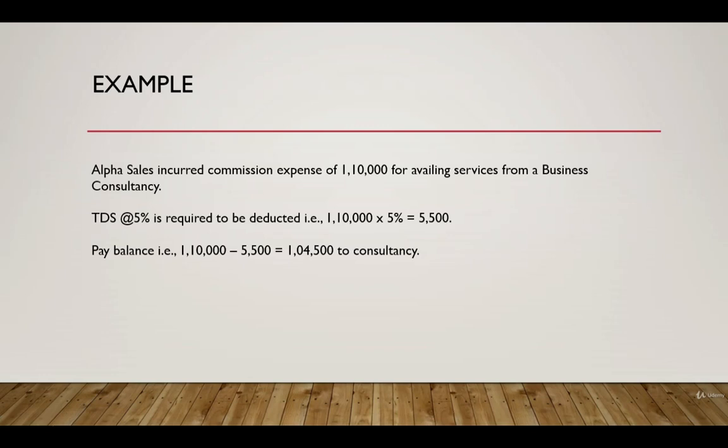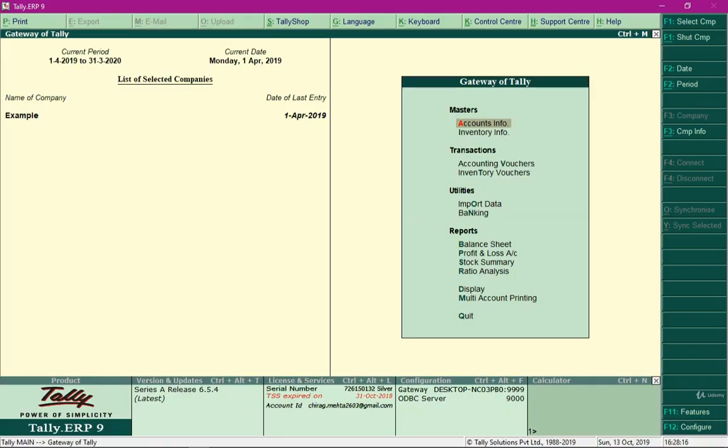We are required to pay rupees five thousand five hundred from the total payment amount to the government, and pay the remaining balance of rupees one lakh four thousand five hundred to the consultancy. Now, how do we record this entry in Tally?